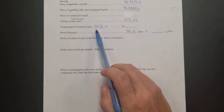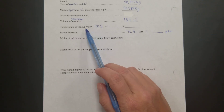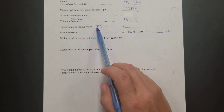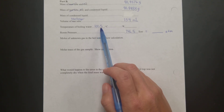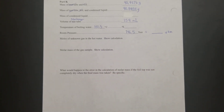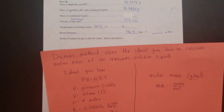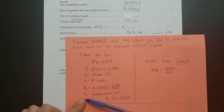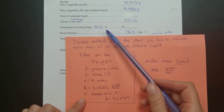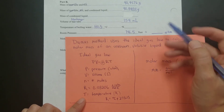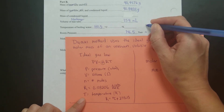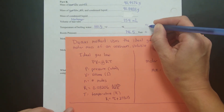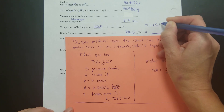While heating the unknown liquid to get it into a gaseous state, the temperature of the water was taken, and that temperature was 100.5 degrees Celsius. Since we're using the ideal gas law, temperature needs to be in Kelvin. To convert, take the value in degrees Celsius — 100.5 — and add 273.15 to it.